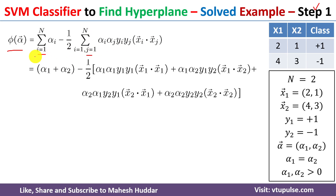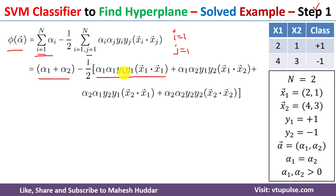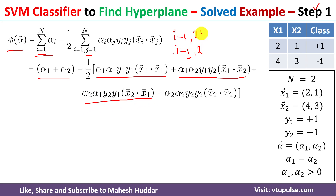We will expand this equation. The first part gives alpha 1 plus alpha 2, minus 1 by 2. The second part has two variables i and j. When i equals 1 and j equals 1, we get alpha 1, alpha 1, y1, y1, x1 dot x1. When i equals 1 and j equals 2, i equals 2 and j equals 1, and finally i equals 2 and j equals 2, we get the remaining terms.